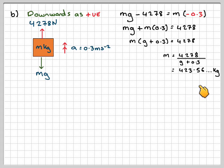which is 423.56 kilograms. The ballast will be the original mass, which is 460 minus this. So the ballast released will be 36.4 kilograms to three significant figures.